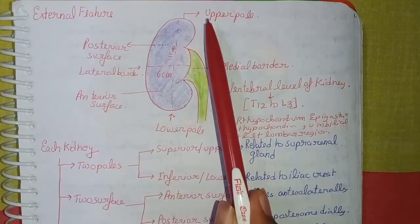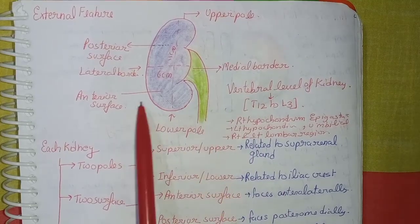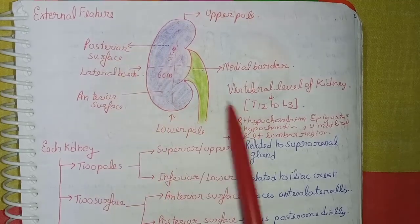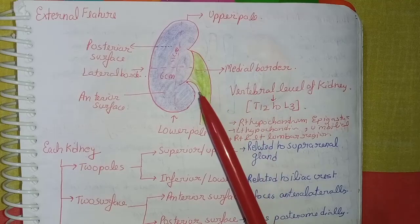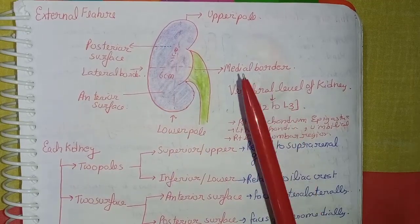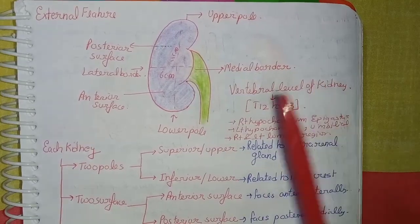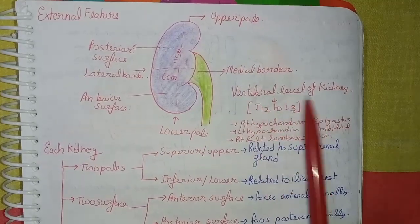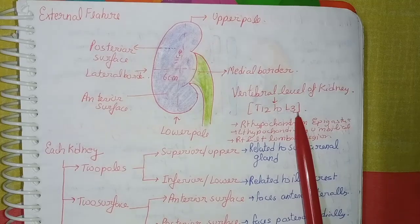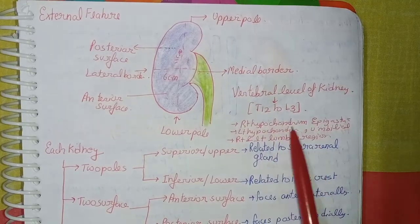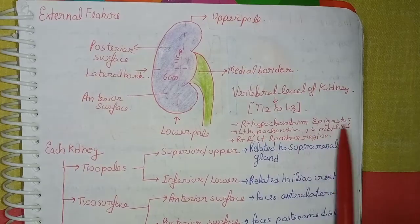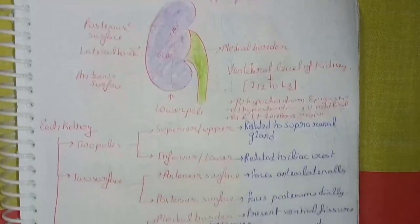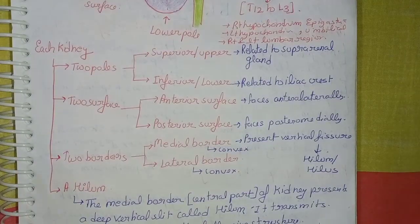Coming to the external features of the kidney: as you can see in the diagram, the kidney has two poles — upper pole and lower pole — two surfaces — anterior surface and posterior surface — and two borders — medial border and lateral border — then the hilum. The vertebral level of the kidney is thoracic 12 to lumbar 3. In the nine regions of the abdomen, it is represented in the right hypochondrium, epigastric, left hypochondrium, umbilical, and right and left lumbar regions.